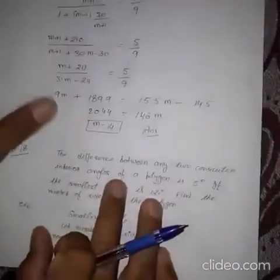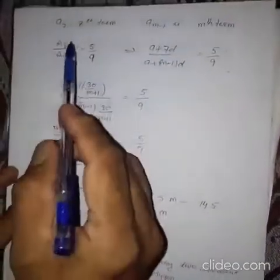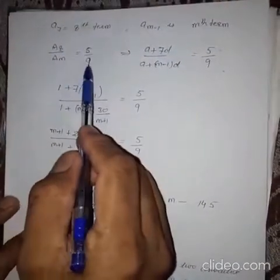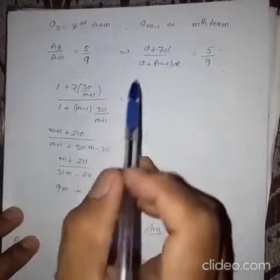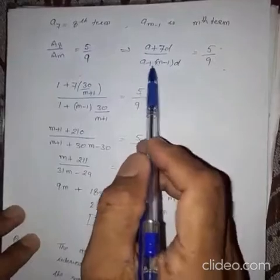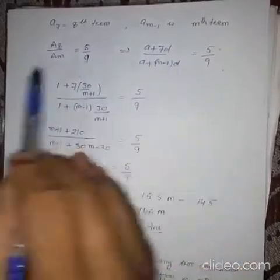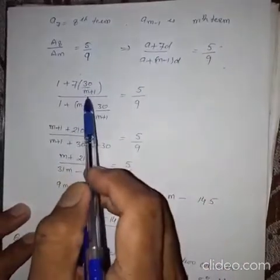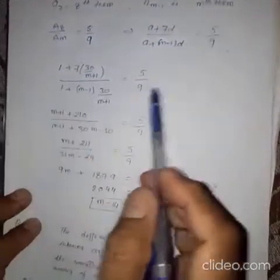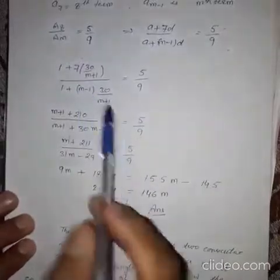So you can put this value like this. So A8 upon AM is equal to 5 upon 9. Using formula A8 can be written as A plus 7D. AM using formula A plus M minus 1 into D. And you put value of D, it is 30 upon M plus 1.